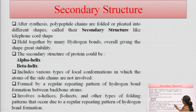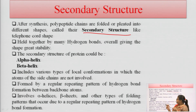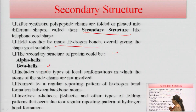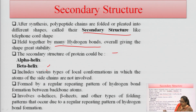In the secondary structure, after synthesis of the primary structure, polypeptide chains are folded or pleated into different shapes — like the cord of a telephone — held together by many hydrogen bonds. The secondary structure of protein consists of the alpha helix and beta sheet forms. These are formed by a regular repeating pattern of hydrogen bond formation involving backbone atoms.